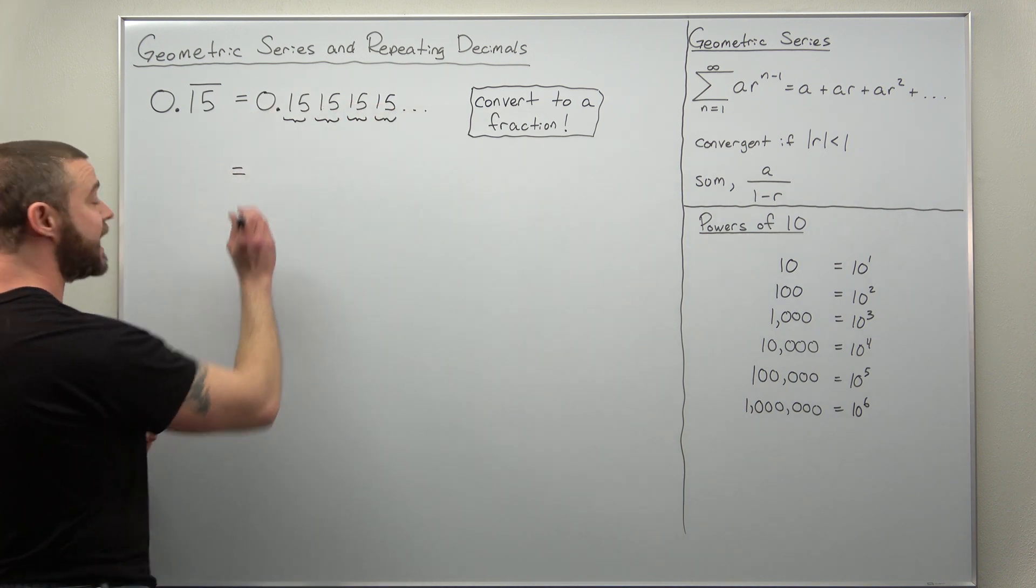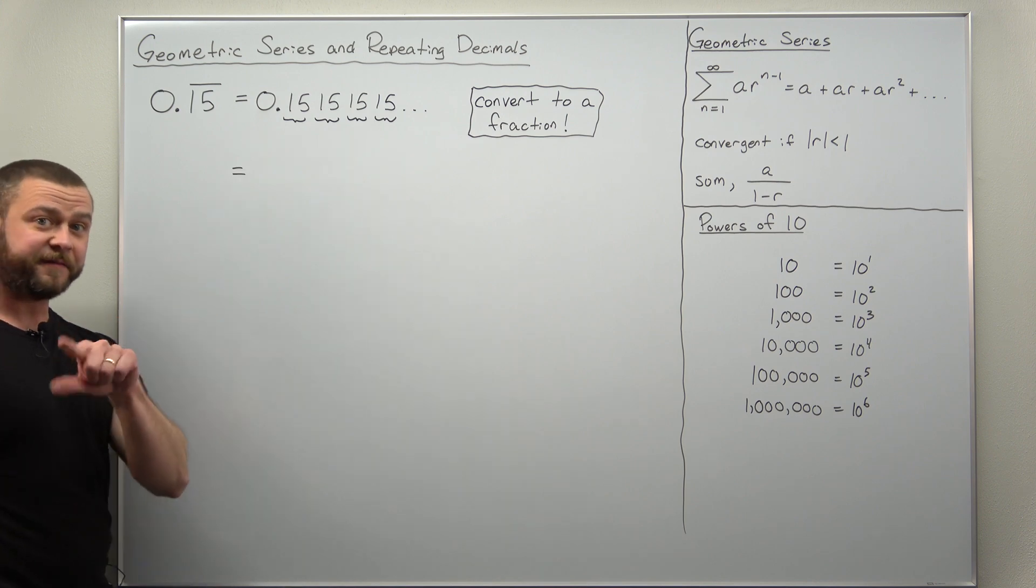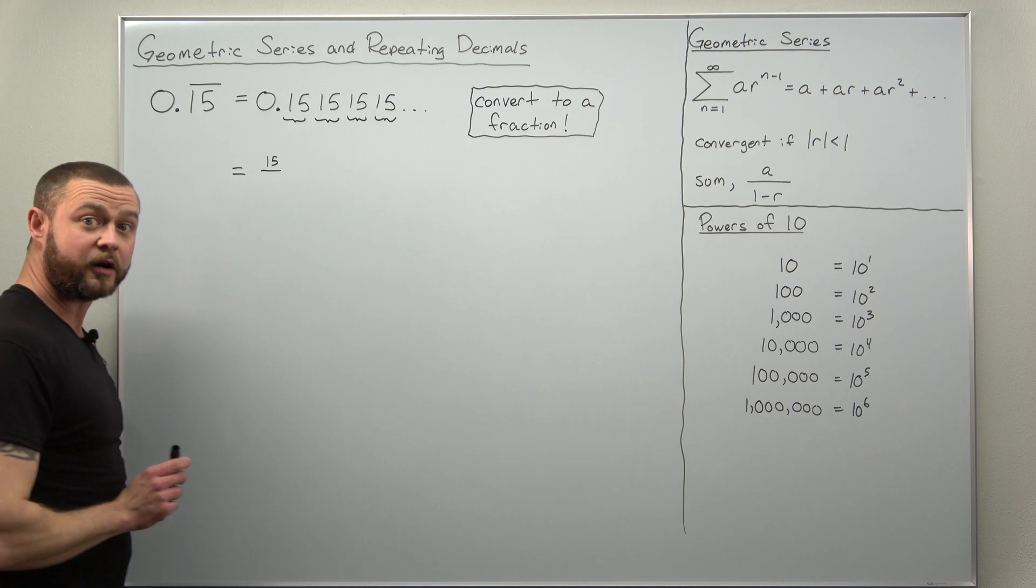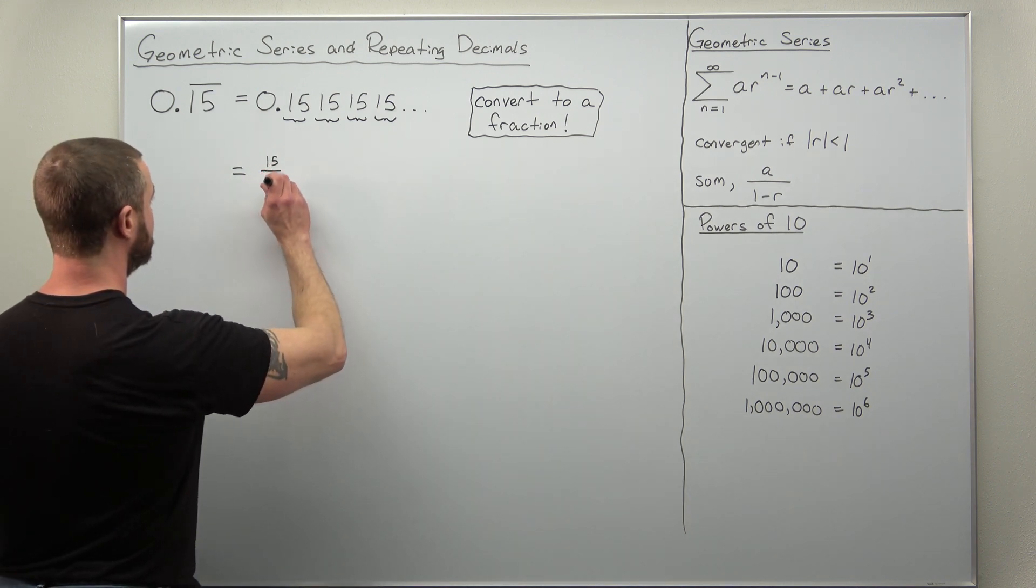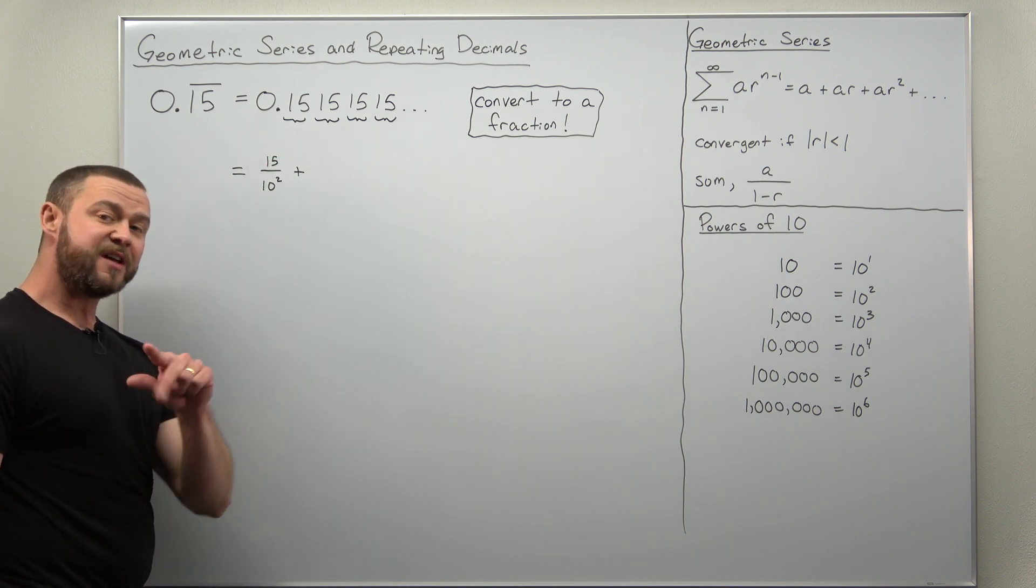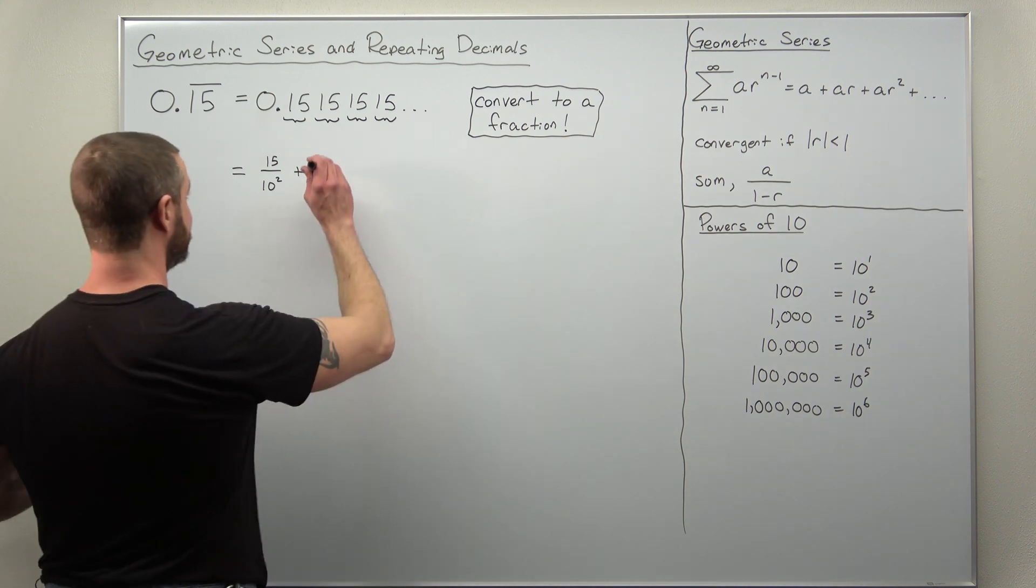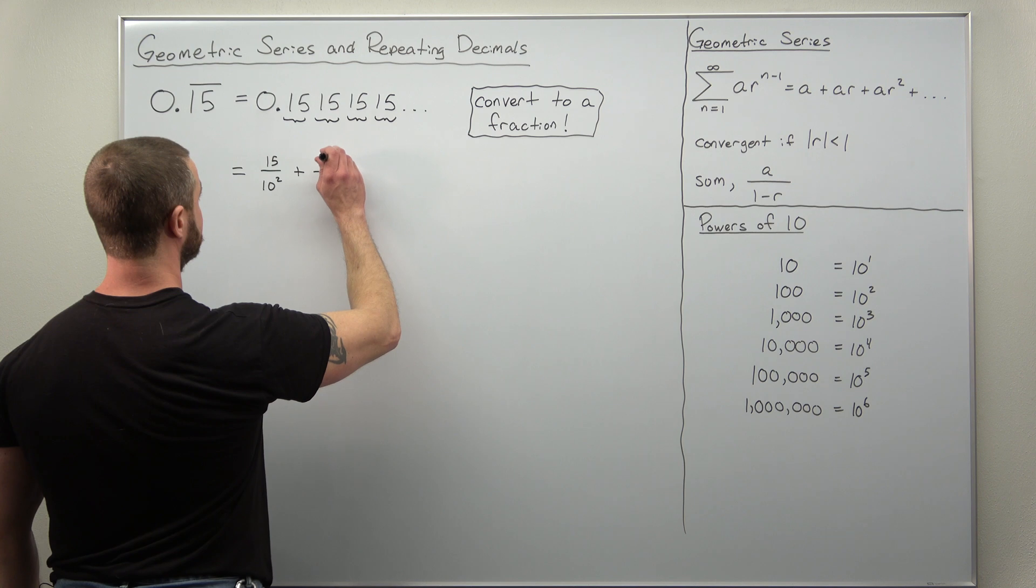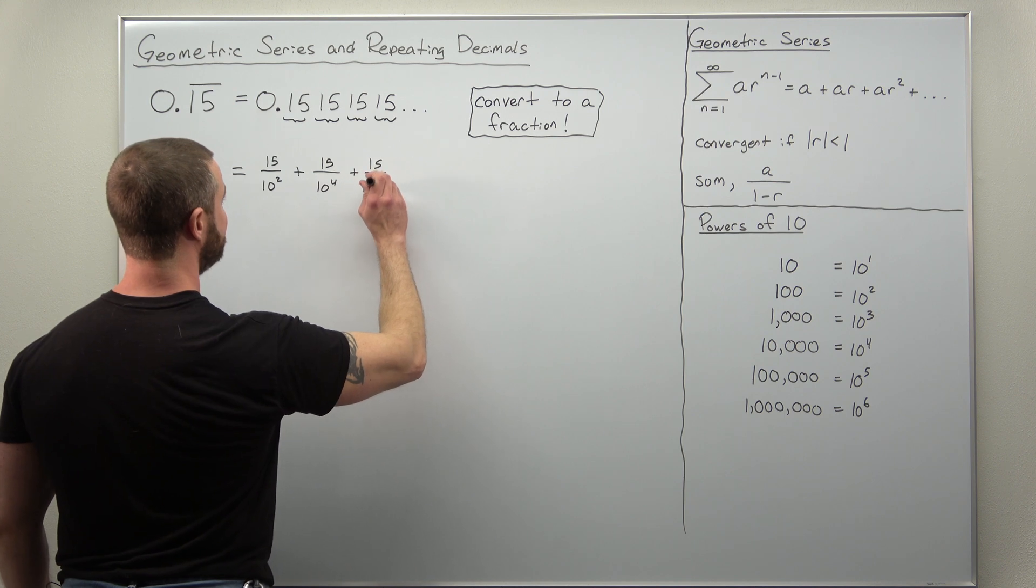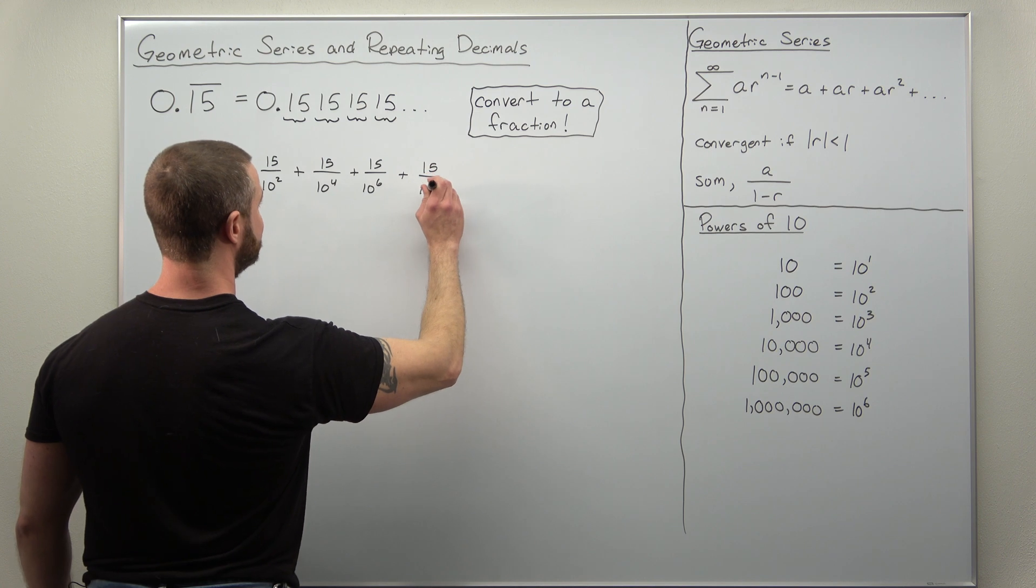And if we write this as a fraction grouping two of these digits together we'll get 15 over 100. I'm going to write 100 as 10 squared. The next two digits will give me 15 over another increased powers of 10. Now 10 to the fourth. We go to the next pair. 15 over 10 to the sixth. And then the last pair written 15 over 10 to the eighth.